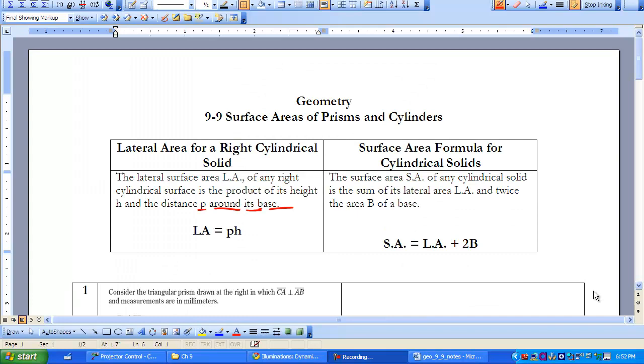This is Geometry Lesson 9-9, Surface Areas of Prisms and Cylinders. We know prisms and cylinders fall under the cylindrical solid category. We're going to explore two formulas: the lateral area formula and the surface area formula. The reason we're exploring lateral area is because we need lateral area in order to find the surface area of our prism or cylinder.